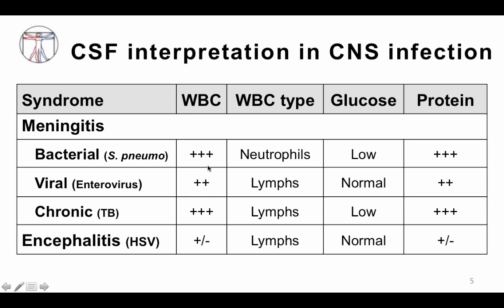In viral meningitis, you'll have elevated white blood cells, but here they are lymphocyte predominant. You'll have a normal glucose and elevated protein, but usually less elevated than in bacterial meningitis. With chronic meningitis — the classic example being Mycobacterium tuberculosis — you can have elevated white blood cells again lymphocyte predominant, very low glucose, and very high protein. In encephalitis, such as with herpes virus, you may have no white blood cells at all, because this is inflammation of the brain rather than meningeal inflammation. When white blood cells are present, they are usually lymphocytes, with normal glucose and possibly some elevation in protein.